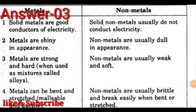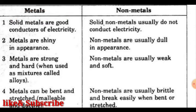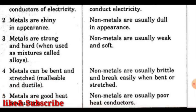Question number 3 requires differentiating between metals and non-metals in 4 points. First: metals are good conductors of electricity while non-metals usually do not conduct electricity. Second: metals are shiny in appearance whereas non-metals are usually dull. Third: metals are strong and hard whereas non-metals are usually weak and soft. Fourth: metals can be bent and stretched whereas non-metals are usually brittle and break easily when bent or stretched.